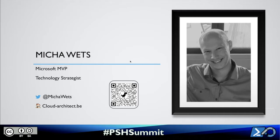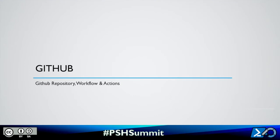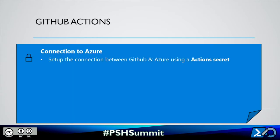I will quickly take over the screen and we will dive right into the first topic of today — GitHub. We will talk about GitHub repository, Workflow, and GitHub Actions, which is our main topic. If you want to start with GitHub Actions and you want to deploy something or test something in Azure, you need that connection to Azure, because by default GitHub Actions is unable to connect to your Azure environment. To do that, you need to use Action Secrets.